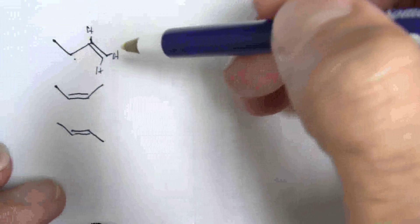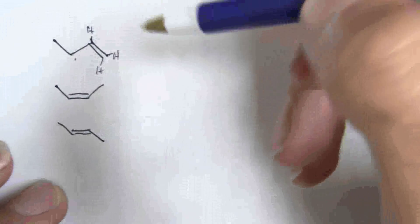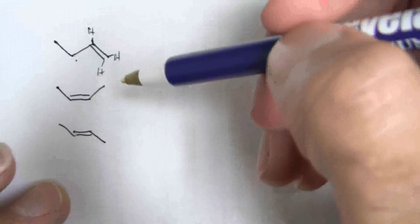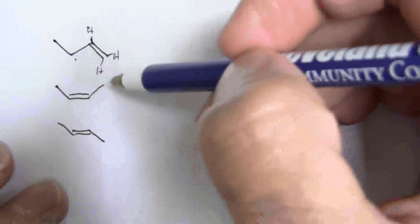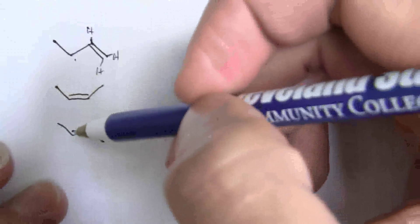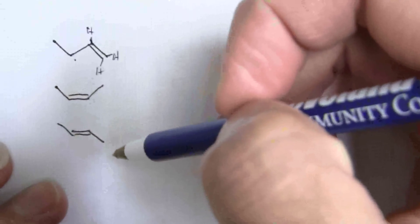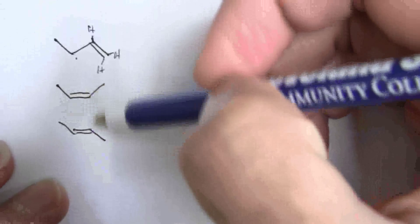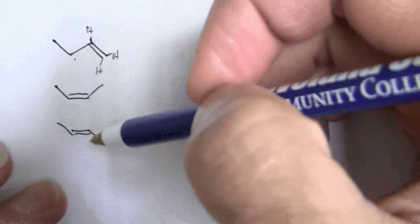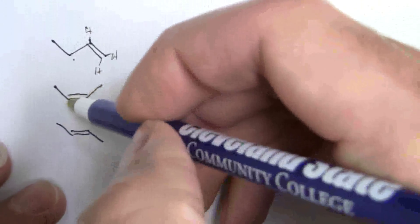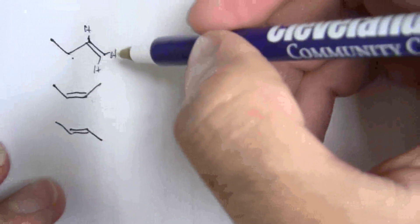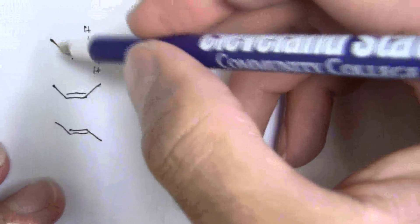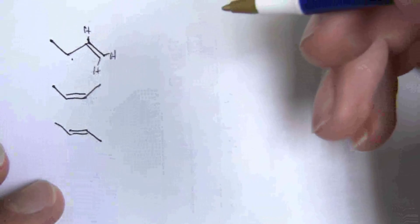So it turns out that the isomer with the most substituents, we call it the most substituted alkene. It has two branches on these ones. These are more stable than when there's only one branch.